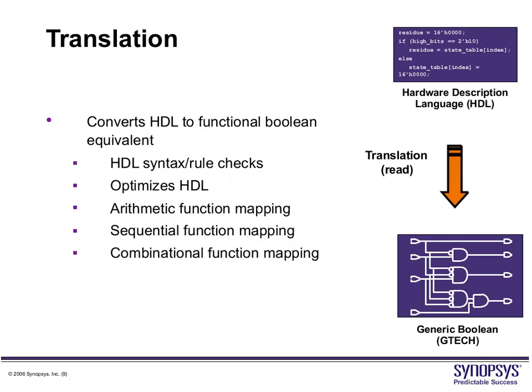The process of translation will perform HDL syntax and rule checking and will map arithmetic functions. For example, C = A + B: that plus translates to an adder in hardware, which is mapped to a GTECH adder — a generic Boolean adder. Sequential function mapping: whenever you have an always block representing a flip-flop or latch, that register will be mapped to a generic flip-flop. There will also be combinational function mapping for AND and OR gates — all done at the GTECH space.